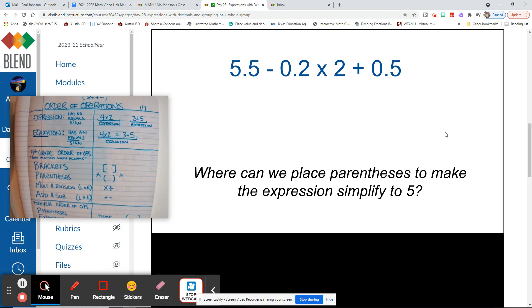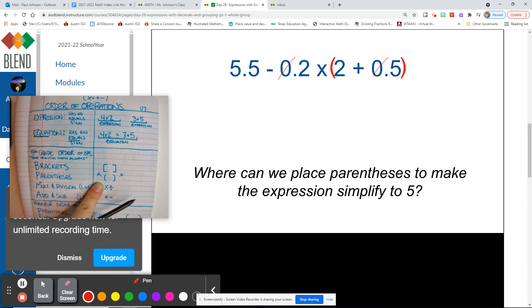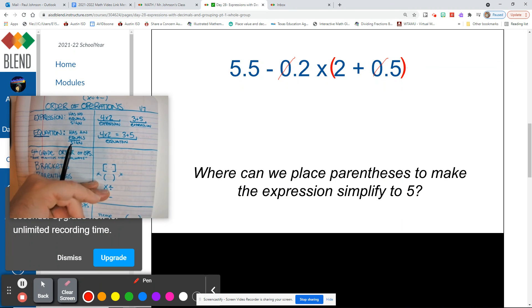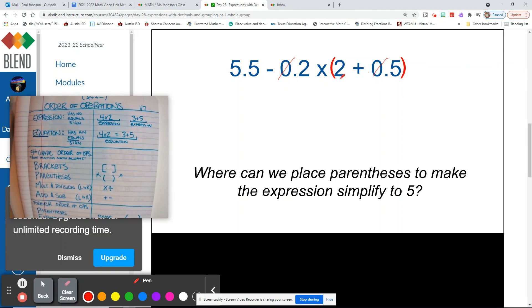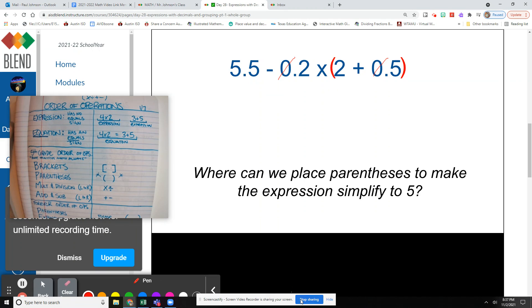Welcome back. Alright, so let's see how it works. So if we put parentheses around the 2 and the 5 tenths, this expression will actually turn into 5. Alright, first thing I would do is get rid of that 0 right there because that's just extra numbers and extra digits to look at. So I'd get rid of both of those 0s. So 5 and 5 tenths, we have to look at minus 2 tenths times 2 plus 5 tenths. And we have to look what's in parentheses first, what's in our grouping symbols. So when we come back to the next video, let's take a look at how this expression turns into the answer or simplifies into the digit 5. So I'll see you then. Bye.